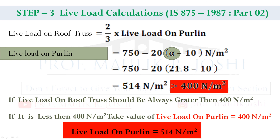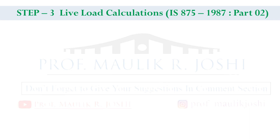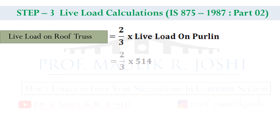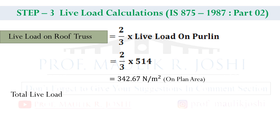Now putting the value into the live load on roof truss equation: live load on roof truss is equal to 2/3 into live load on purlin, which is 2/3 into 514, giving a final answer of 342.67 newton per meter square on plan.